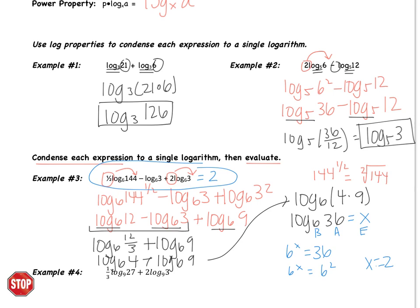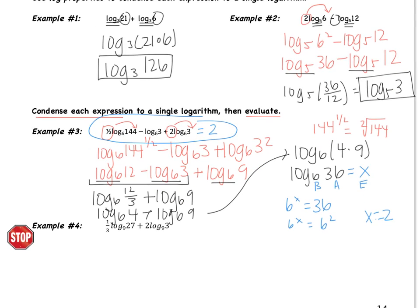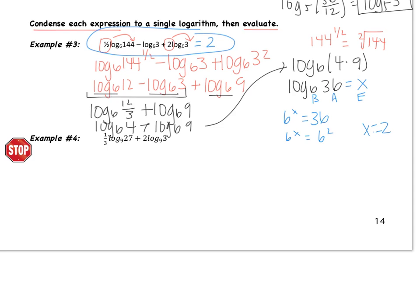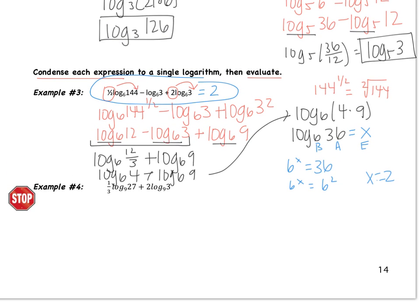As a recap: first deal with all the powers, then condense the logs using division and multiplication of the arguments into one log, then evaluate. Now try example 4 on your own — you're going to condense and then evaluate. To start, deal with those powers first. Pause the video and come back when you're finished. Good luck.